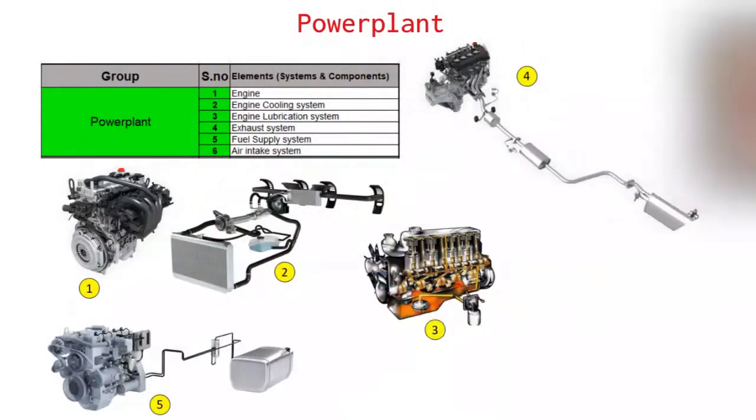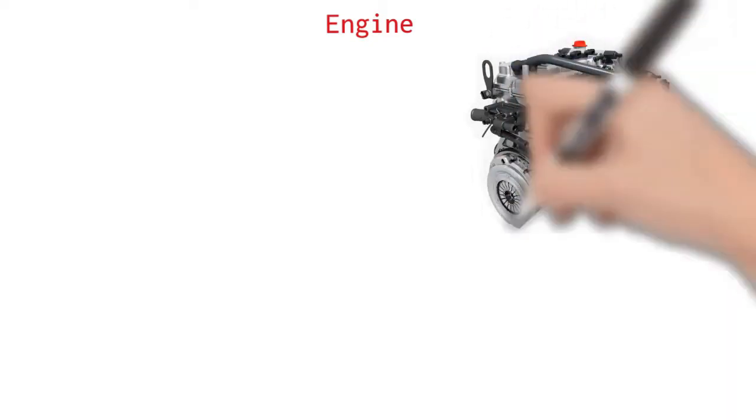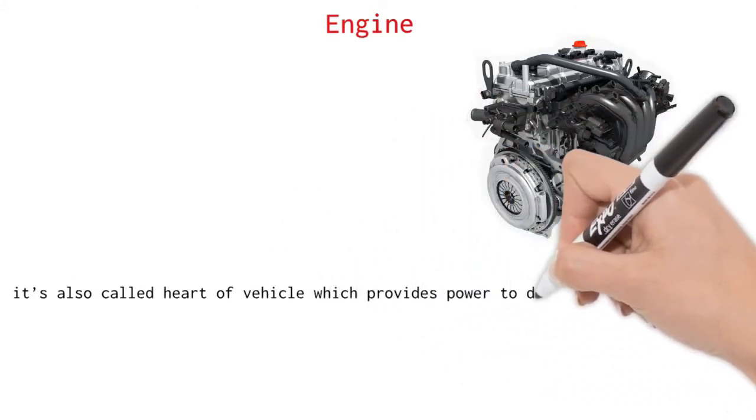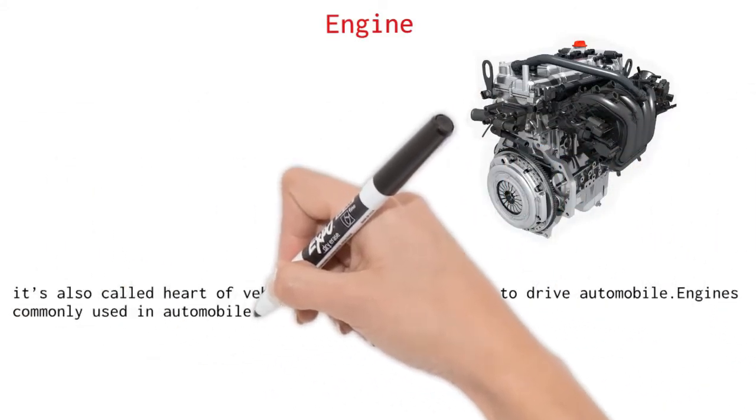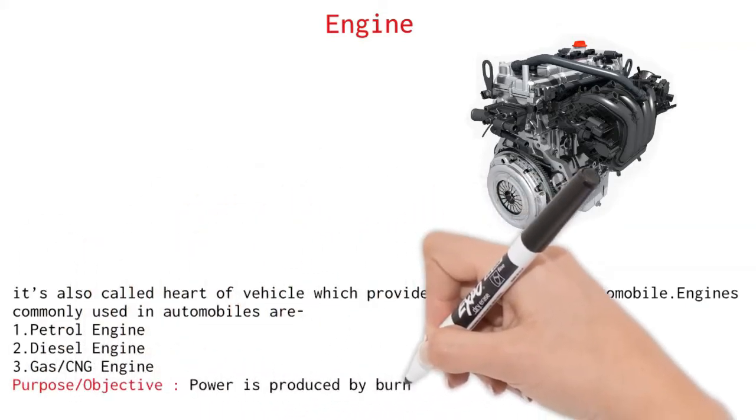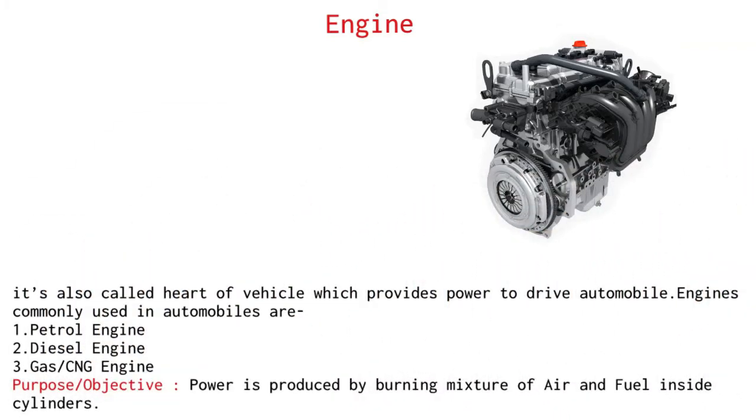Power plant. Power plant is formed on grouping of following six systems. Engine. It is also called heart of vehicle which provides the power to drive the automobile. Power is produced by burning mixture of air and fuel inside the cylinders. Engines commonly used in automobiles are petrol engine, diesel engine, gas or CNG engine.